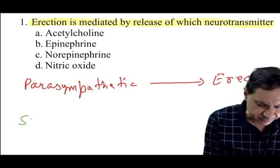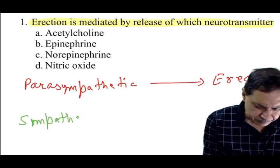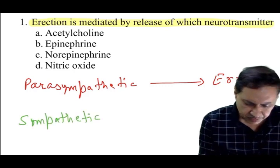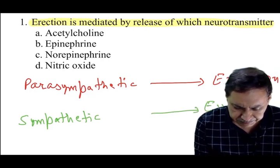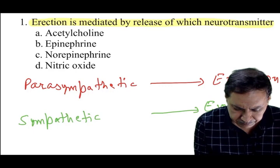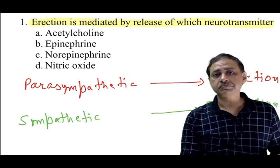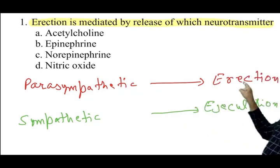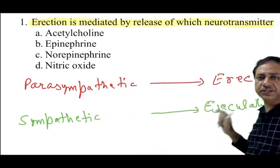Parasympathetic will lead to ejaculation. Parasympathetic will lead to erection and sympathetic nerve will lead to ejaculation.